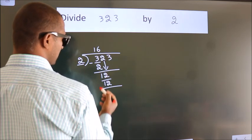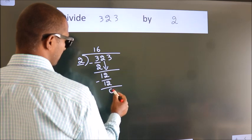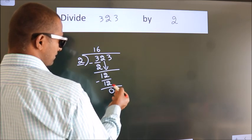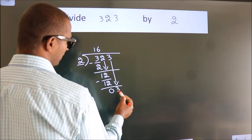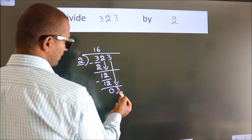Now, we subtract. We get 0. After this, bring down the beside number. So, 3 down. So, 3.